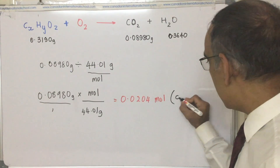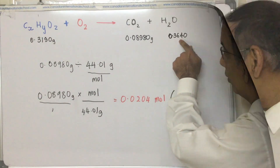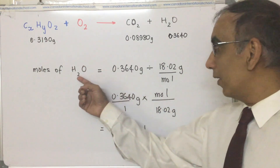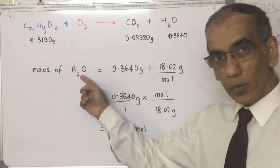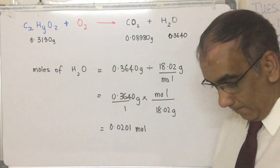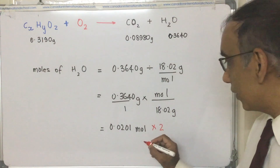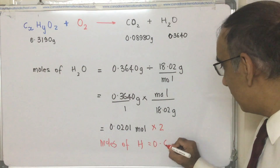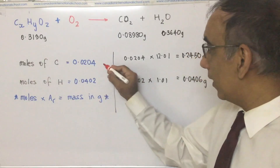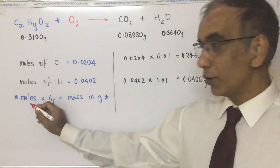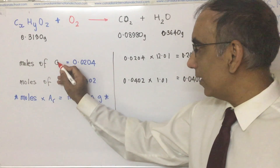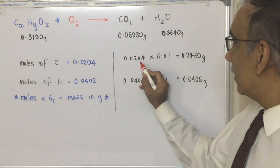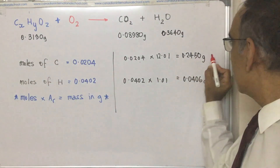We do a similar calculation for H2O to get the moles of H2O. We must be aware that for every one molecule of H2O there are two hydrogens, so if you have this many moles of H2O, you have twice as many moles of hydrogen — 0.0402 moles. Once we have moles of carbon and hydrogen, we use moles multiplied by the relative atomic mass to give the mass in grams. Multiplying the moles of carbon by its atomic mass gives the mass of carbon.